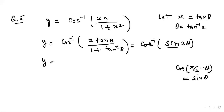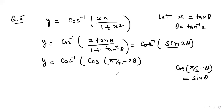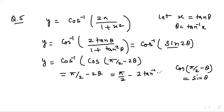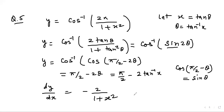So y = cos⁻¹(cos(π/2 − 2θ)) = π/2 − 2θ, where θ = tan⁻¹ x. Therefore y = π/2 − 2 tan⁻¹ x. Differentiating with respect to x, dy/dx = 0 − 2/(1 + x²) = −2/(1 + x²).